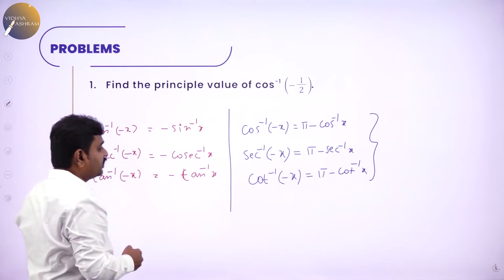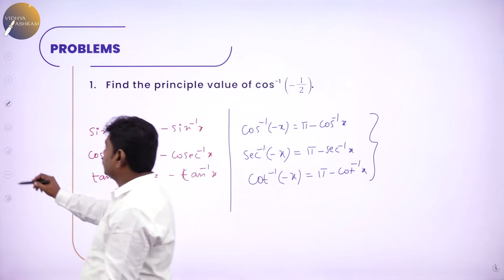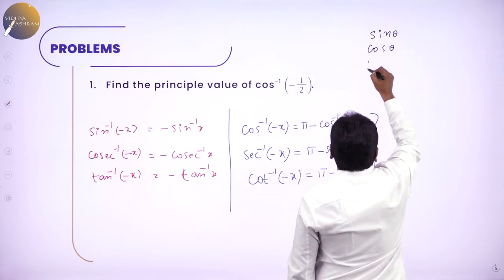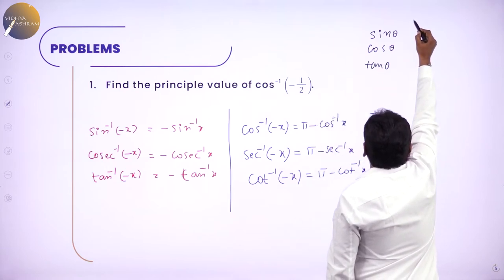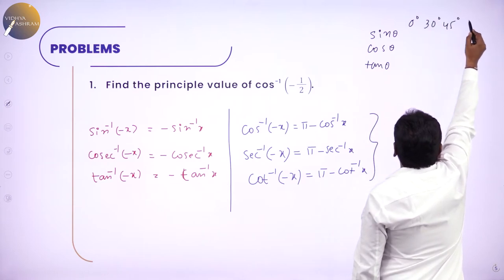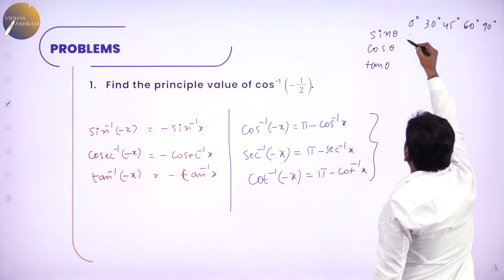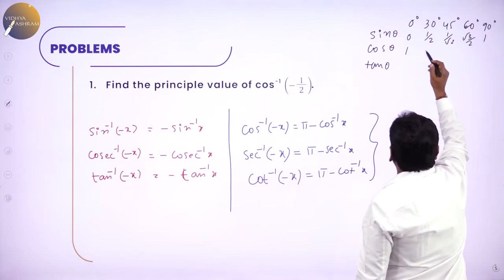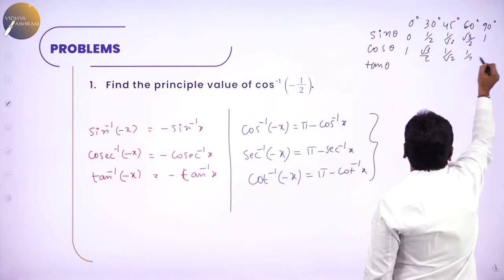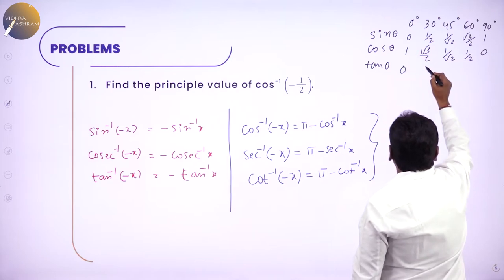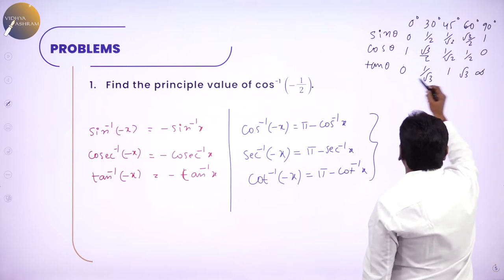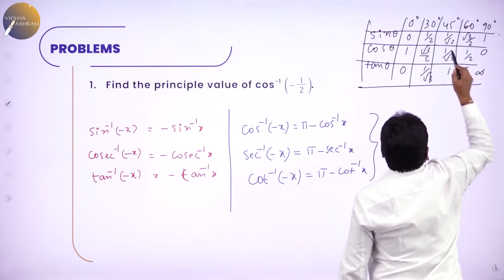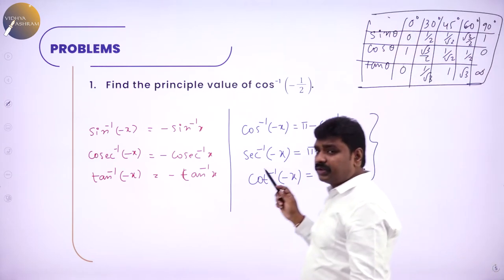Another important thing: the angle table. Standard values for sin θ, cos θ, tan θ at 0°, 30°, 45°, 60°, 90°. Sin: 0, 1/2, 1/√2, √3/2, 1. Cos: 1, √3/2, 1/√2, 1/2, 0. Tan: 0, 1/√3, 1, √3, undefined. And remember: 30° = π/6, 45° = π/4, 60° = π/3, 90° = π/2, 180° = π. First become thorough with this table, then you can solve the problems.